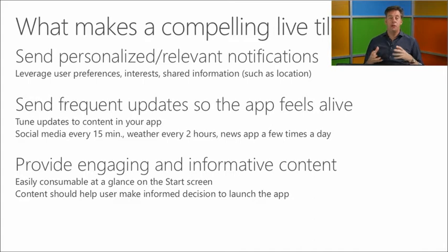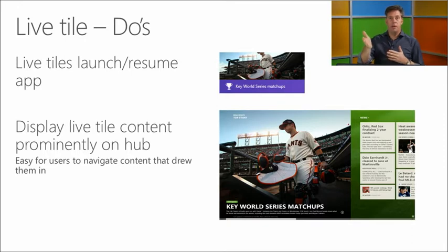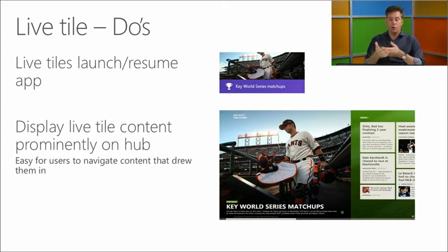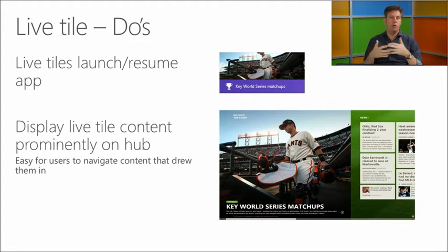A good thing to do with live tiles is proper launch and resume behavior. We saw the secondary tile opens to the basketball section; if the app is already open, it resumes. The secondary tile will launch your app with extra parameters so you know where to go. Also, try to display live tile content prominently in the hub — if content is on the tile but not visible when the app opens, users will be confused and may switch off the live tile.